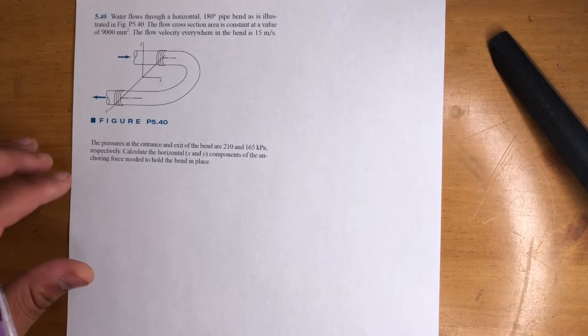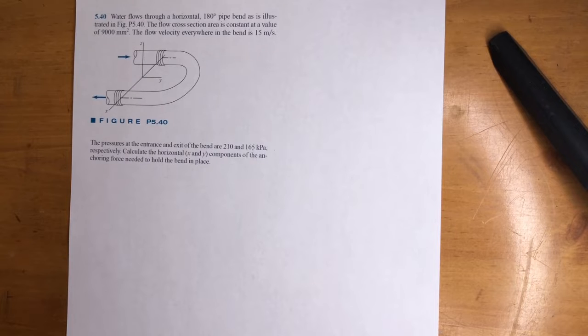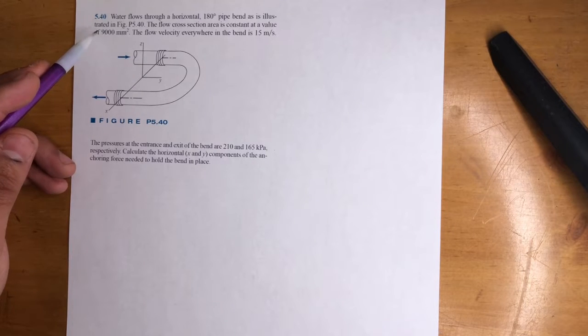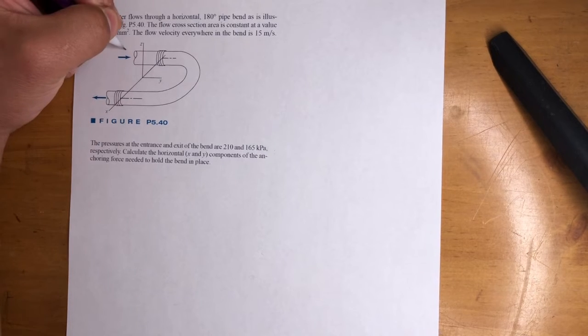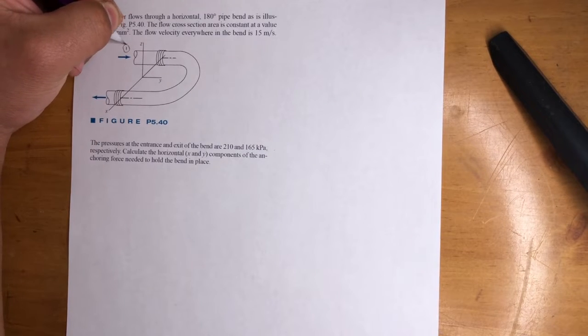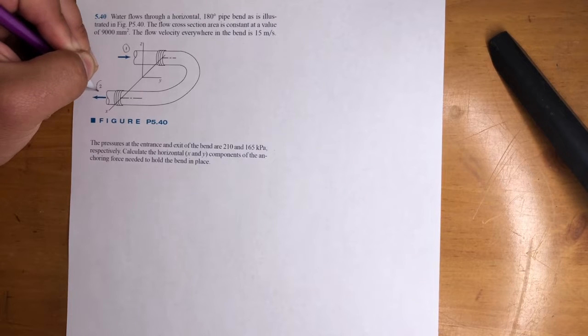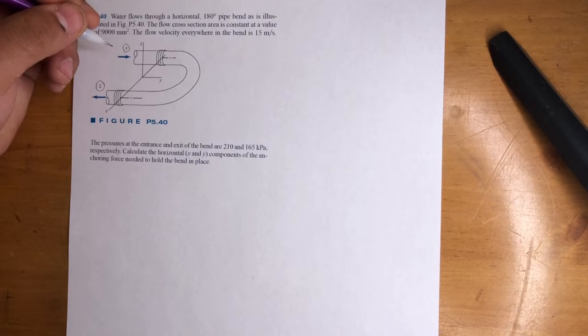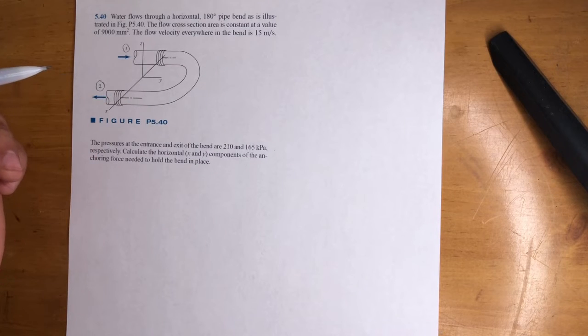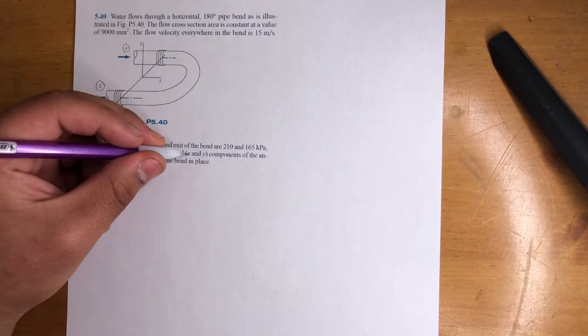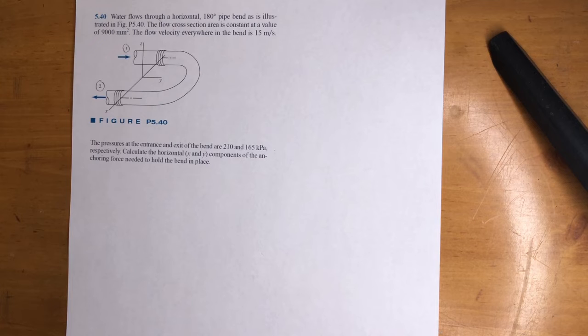Alright, so we're dealing with water here. We got area, velocity at the inlet. So let's go ahead and label this point 1 and this point 2, inlet and outlet. What else did they give us? They gave us the pressures at the entrance and the exit. We got to find the x and y components of the anchoring force.